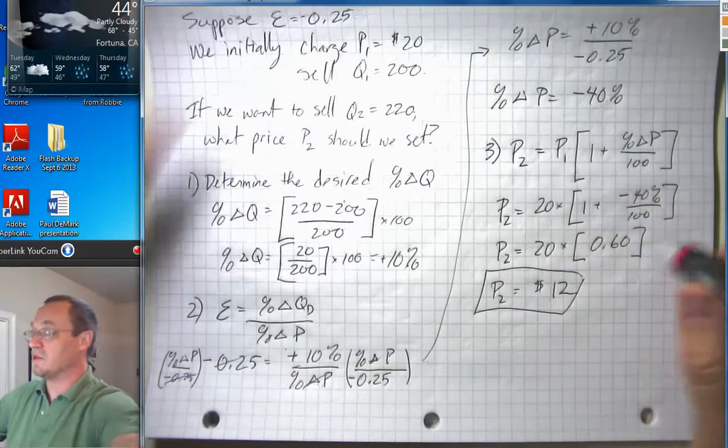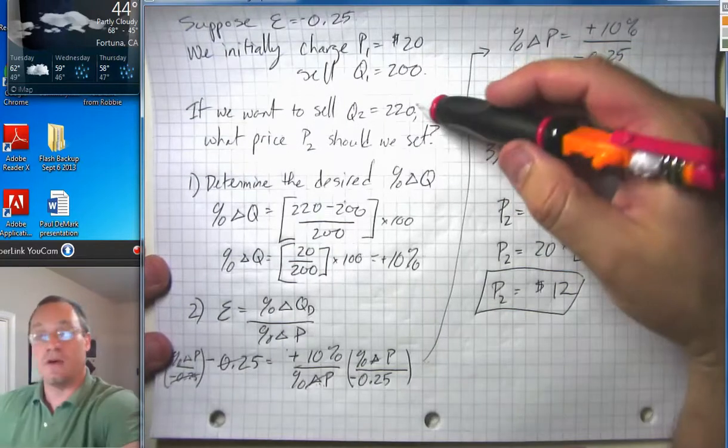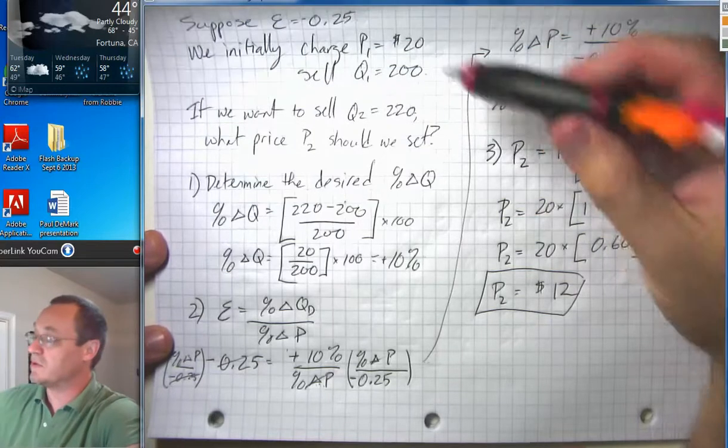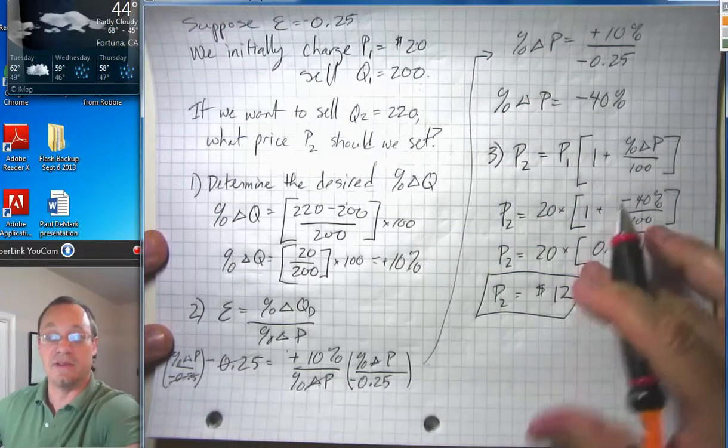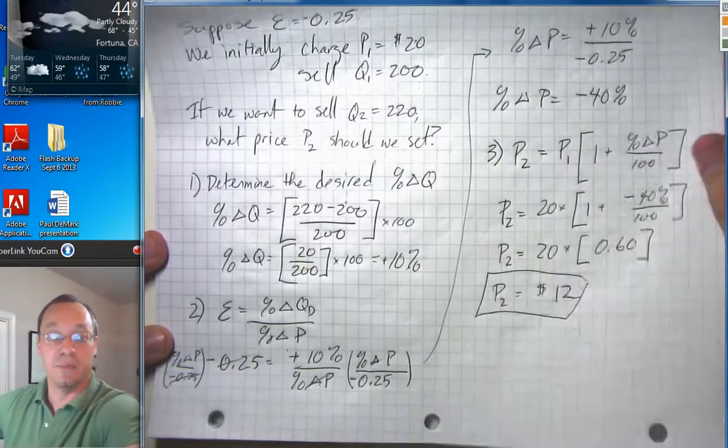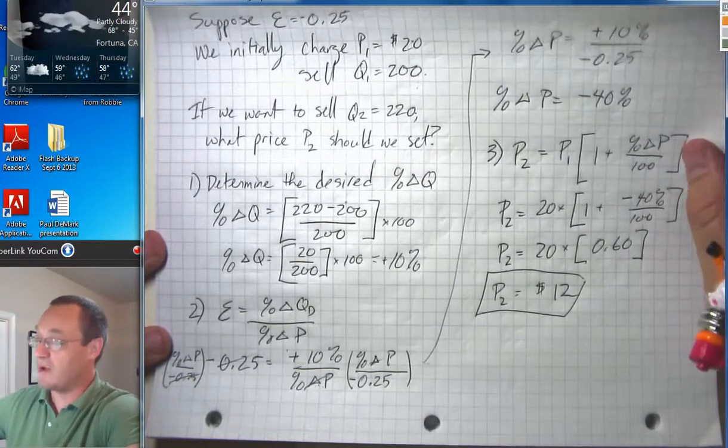So that's our answer. If we want to be able to sell those 220 units instead of those 200 units, we have to drop prices from $20 down to $12. Again, probably not a good business decision, but that's what we would have to do.